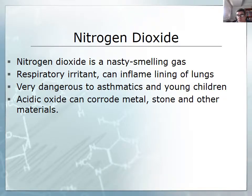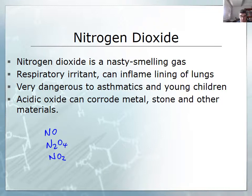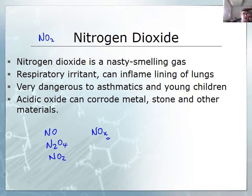A couple of important things about nitrogen oxides: firstly, there are a number of them — they are just combinations of nitrogen and oxygen. Probably one of the most important ones is nitrogen dioxide, NO2. There are other combinations, which is why we use the shorthand NOx, where X can be any number, meaning the ratio of nitrogen to oxygen can change. So we have nitrous oxide as NO, dinitrogen tetroxide as N2O4, and nitrogen dioxide, which is the one we're focusing on here.